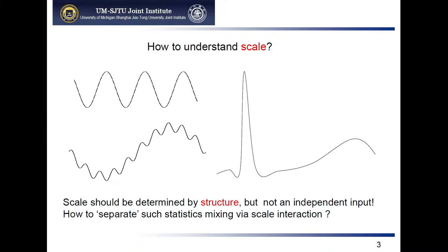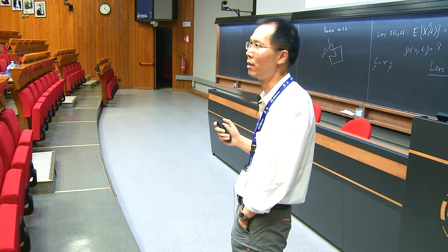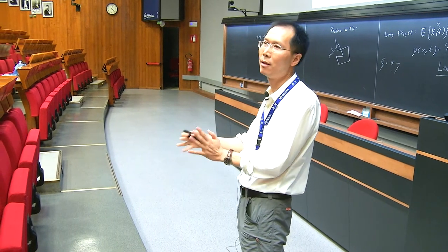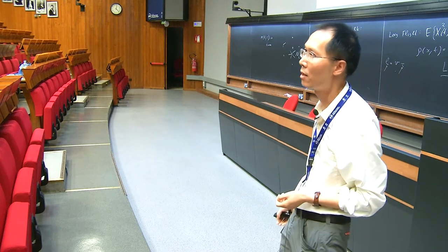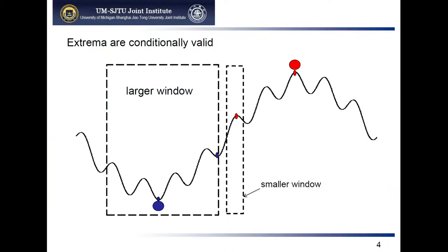The next step is how to separate or define such better scales. If you do Fourier decomposition, you can also define scale, but that is just an approximation that mixes a lot of things. Here we want to define an exact spatial scale. A key observation is that extremal points are conditional — their validity depends on the observation window. If we use a small window, we find certain extreme points. If we use a large observation window, we find different extreme points.